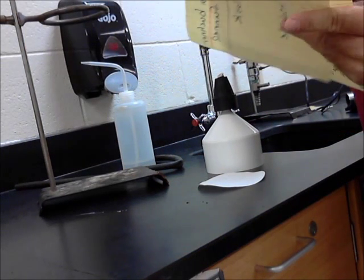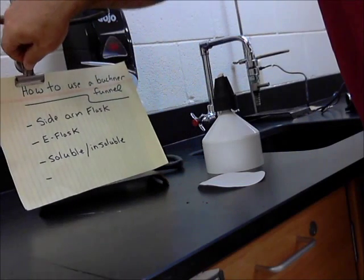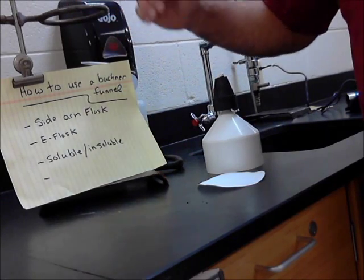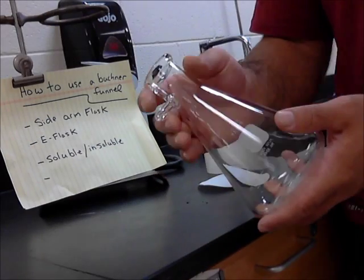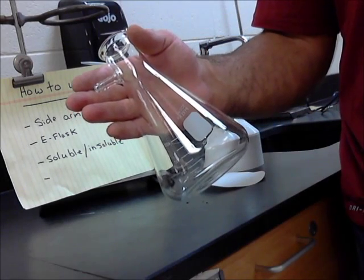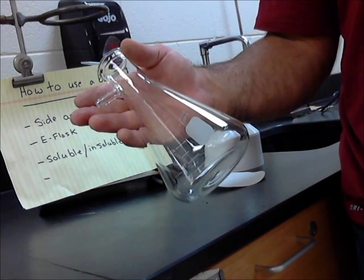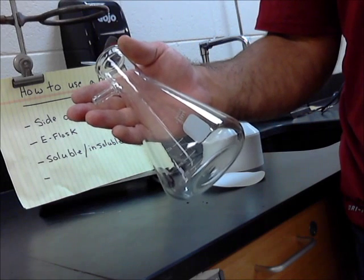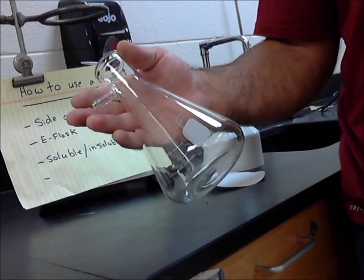Some of the terms that we'll be using in this video or some of the tools we'll be using are going to be what's called a side arm flask. This is a side arm flask. It looks like an Erlenmeyer flask, but it has a side piece to it for vacuum filtration. This whole system, using vacuum filtration, it just speeds the filtering process up. We could easily use gravity filtration, but in some sense that might take a long time.